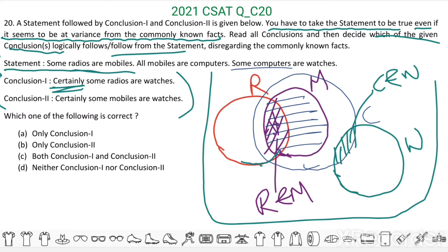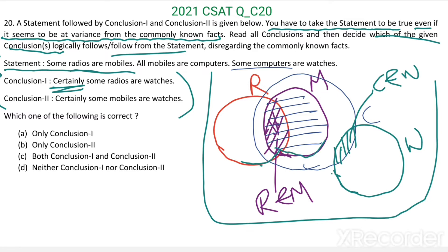Now see conclusion two: certainly some mobiles are watches. The circle for mobiles and the circle for watches — from this Venn diagram we can see no mobiles are watches. So certainly some mobiles are watches — this conclusion is also wrong.